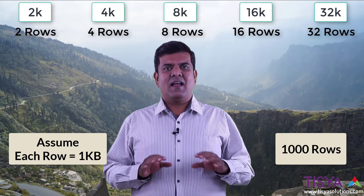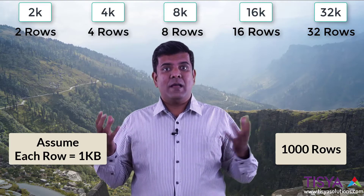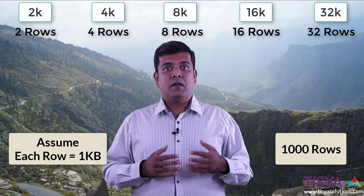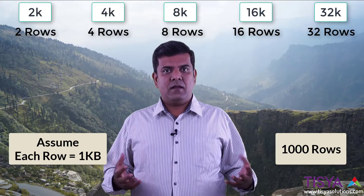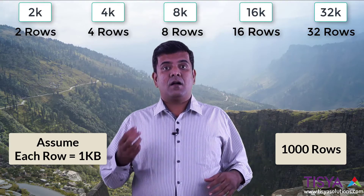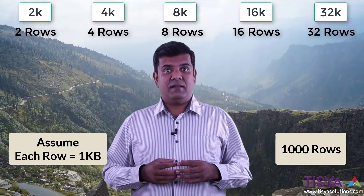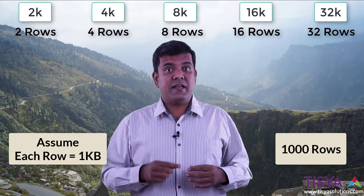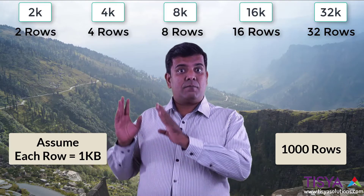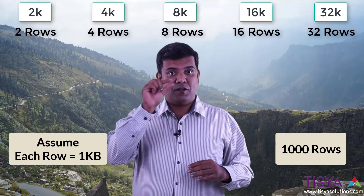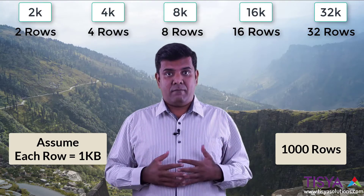For simplicity I'm ignoring the header size — we'll come back to that later. This makes calculations easier from a learning perspective. Now, the Oracle block size determines the smallest unit of IO. Oracle reads from data files at this block size, and the SGA buffer cache is organized into buffers of that same size. So with a 2K block size, your buffer cache buffers are each 2K.